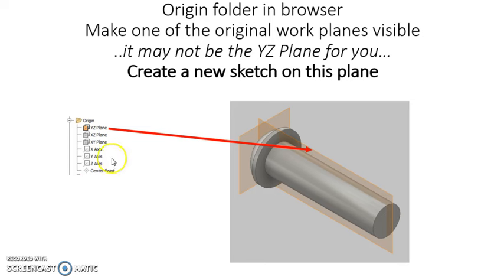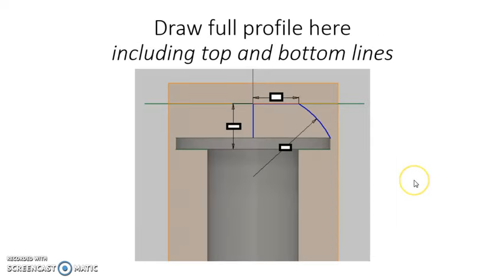When you do that, you can right-click on the plane right here, right-click on it, and choose visibility, and that will make that available for you to use. When you do that, then we can create a new sketch on that work plane, and the new sketch is going to look something like this.